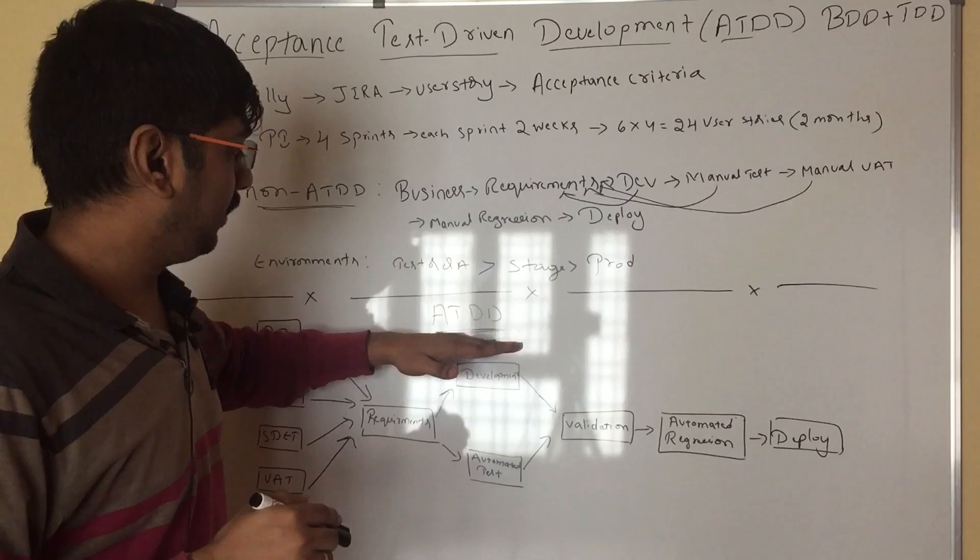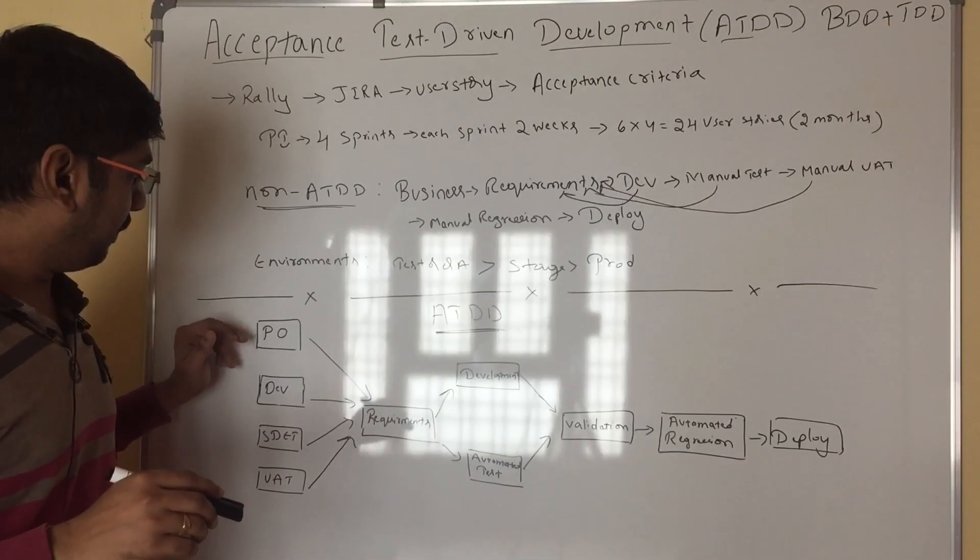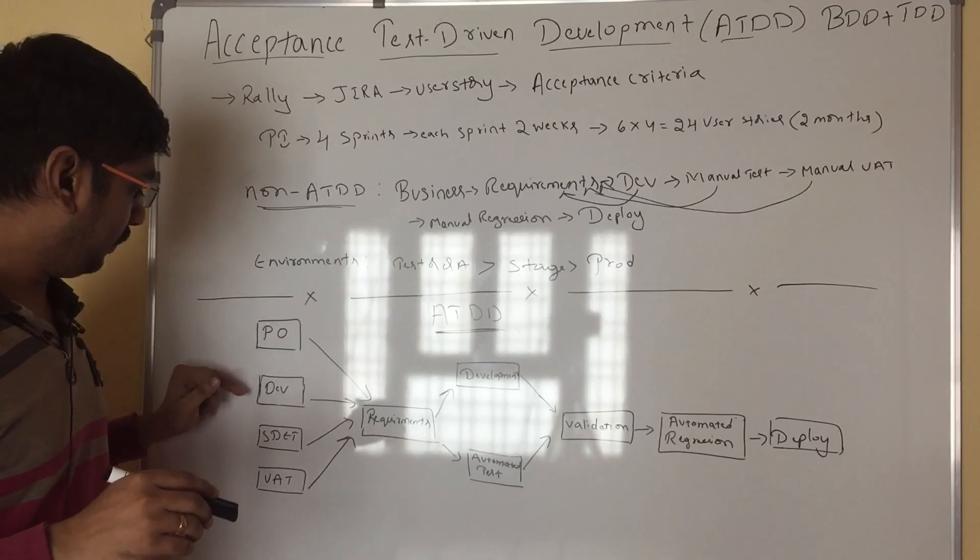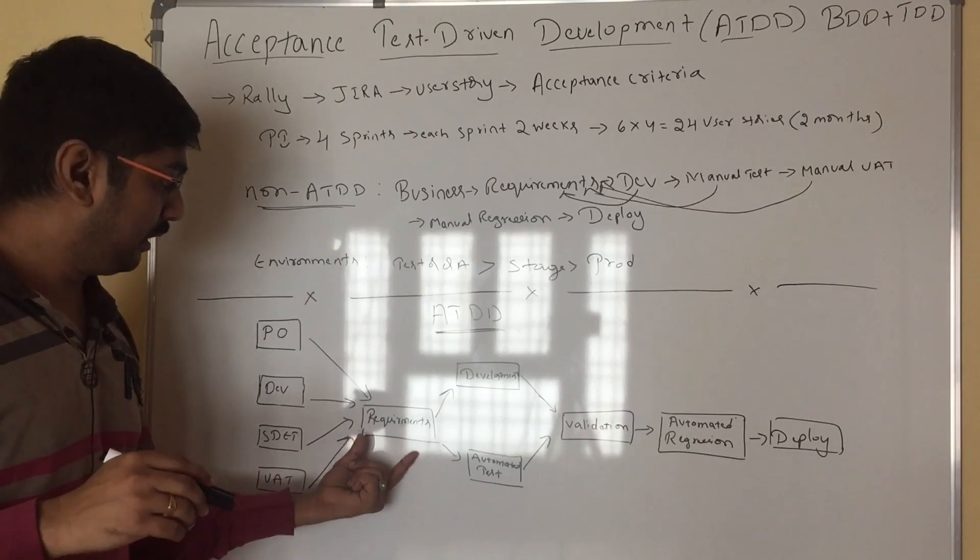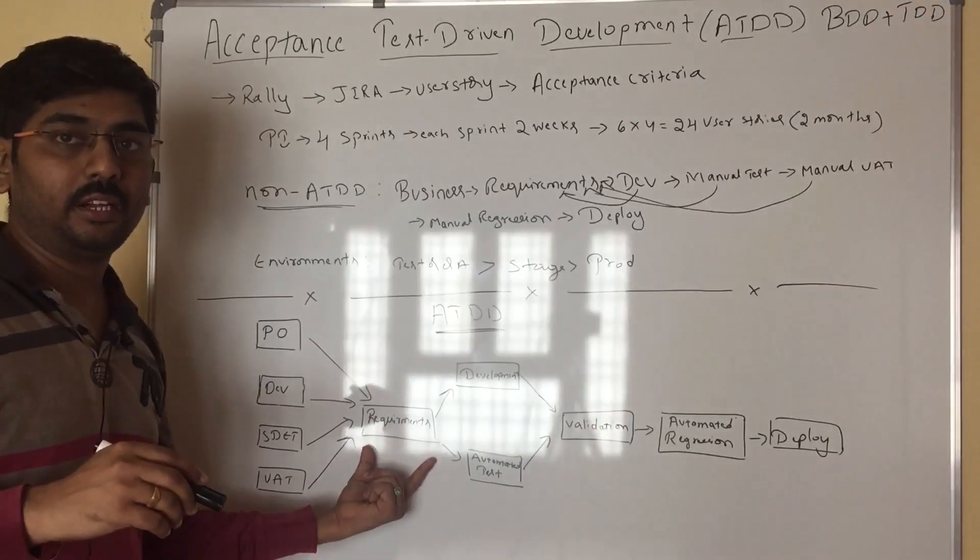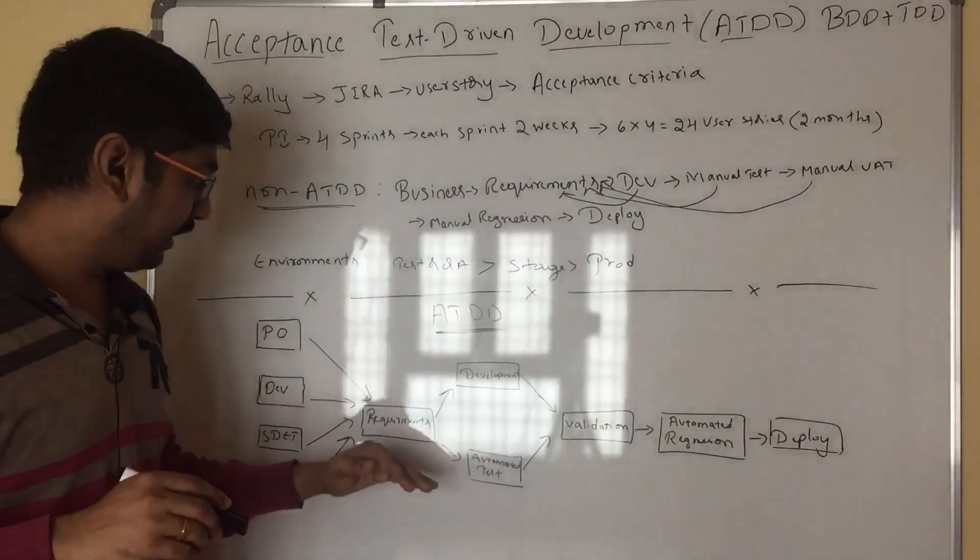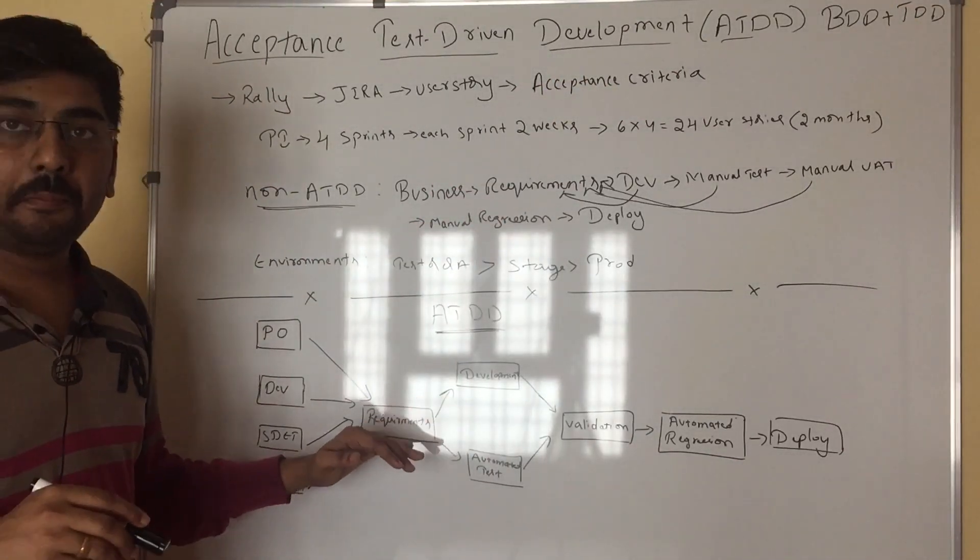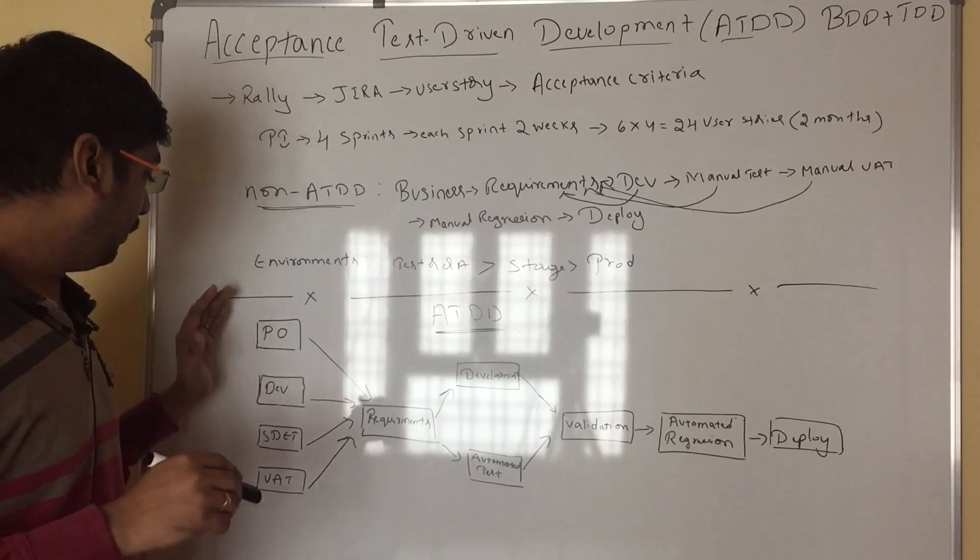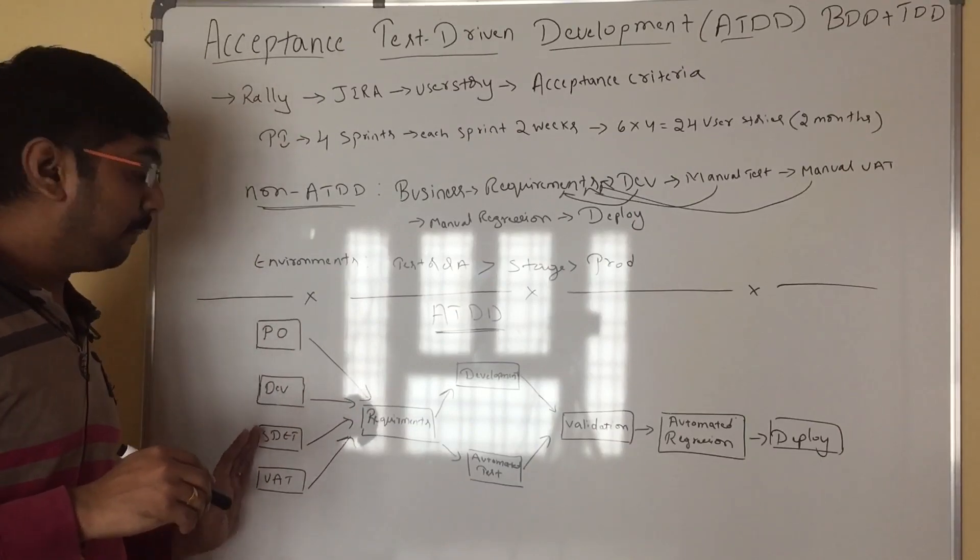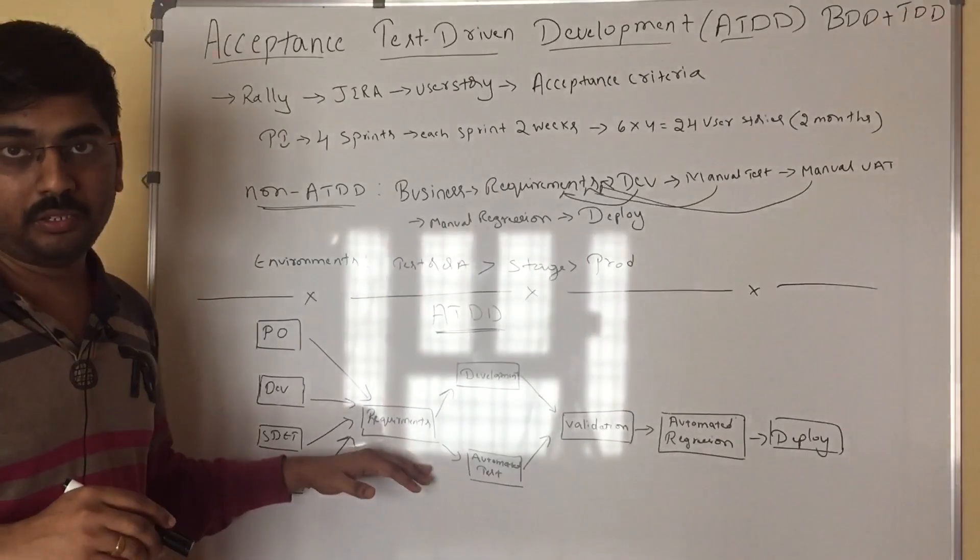Using ATDD, what we are trying to minimize here? You can see here, PO, DEV, SDAT, UAT. All will be involved during the requirements phase. Here, it is like one line acceptance criteria. But here, you will be getting more information on that, what exactly that requirement is speaking. All will be involved, all will be on same page. After all confirmation only, we will get one consolidated requirement.